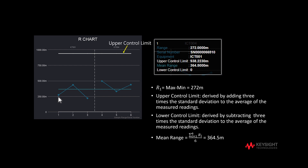The upper control limit is derived by adding three times the standard deviation to the average of the measured readings.